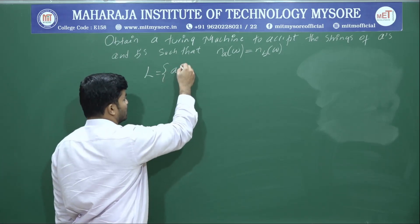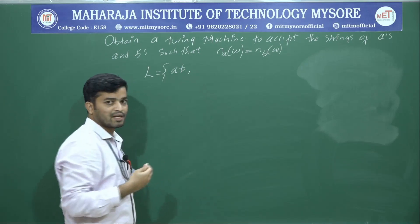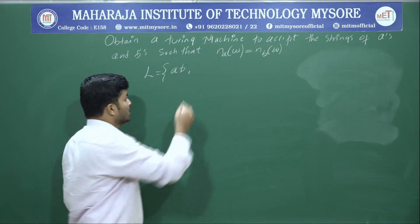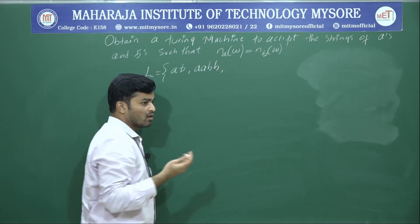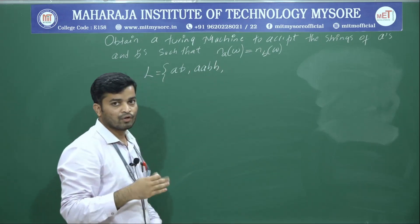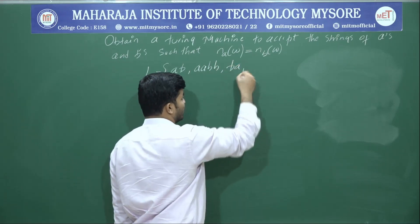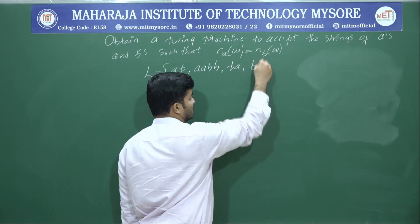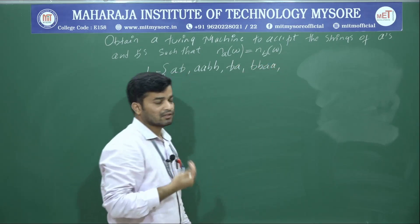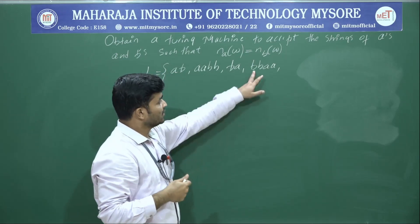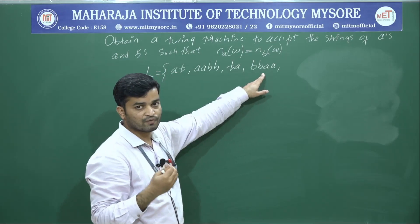Suppose if I have only one A, then there should be exactly one B. If I have 2 A's, then there should be 2 B's, and the order of A's and B's is not important. The string may start from A or it may start from B — both are allowed. But the number of A's within the string should be equal to the number of B's within the string.